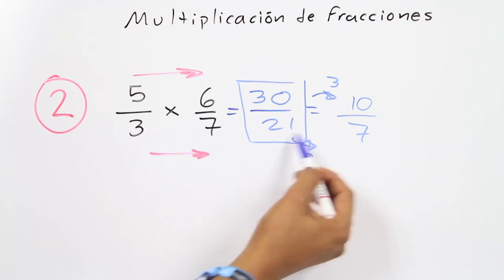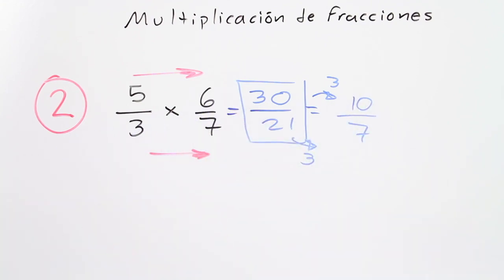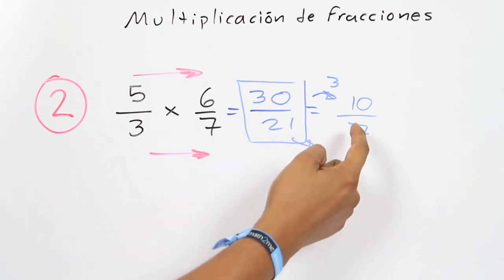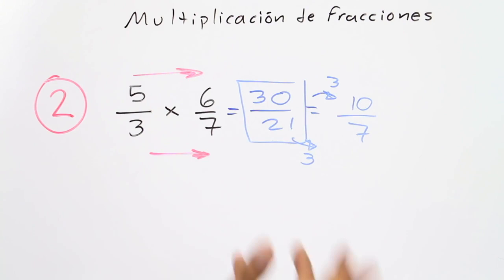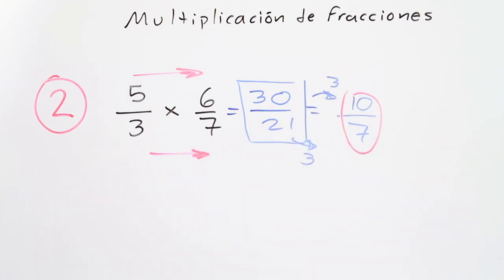And if we try again moving on with simplification, we realize it is not possible to find another common factor since 7 is a prime number and 10 doesn't have 7 as a factor. So now we can be sure this is the simplest form of the fraction.